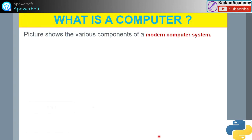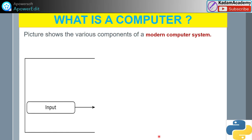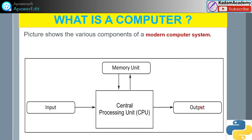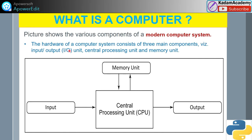The picture shows the various components of a modern computer system: input devices, the central processing unit (CPU) with the memory unit, and output devices. The hardware of a computer system consists of three main components: input/output units, the central processing unit, and the memory unit.